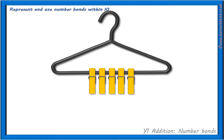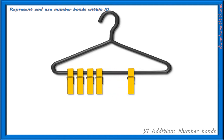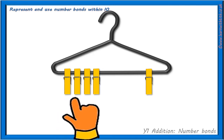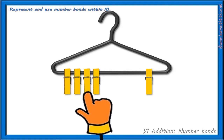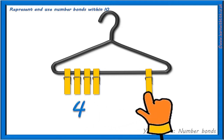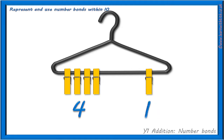Now, let's split these 5 pegs into 2 groups like this. We have 1, 2, 3, 4 pegs on the left and 1 peg on the right, which we can write as a sum like this. 4 add 1 equals 5 pegs together.